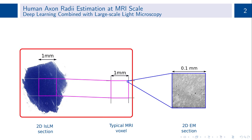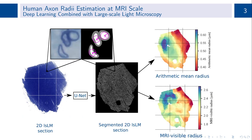Large-scale light microscopy sections cover this area multiple times. This is important because the MRI visible axon radius is weighted towards large, sparsely occurring axons, which are likely underrepresented in small EM sections.